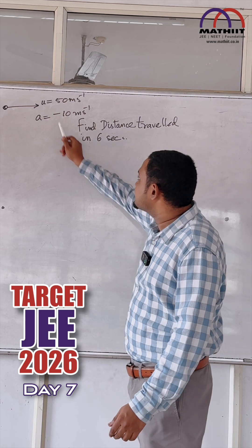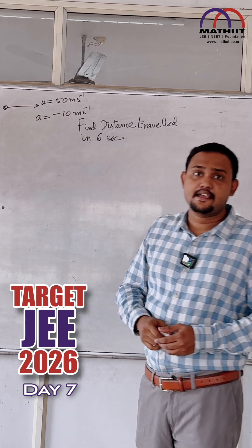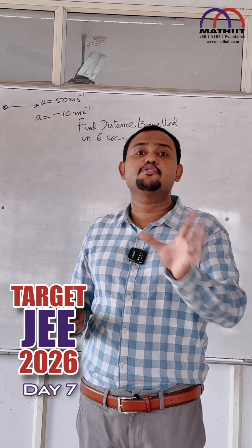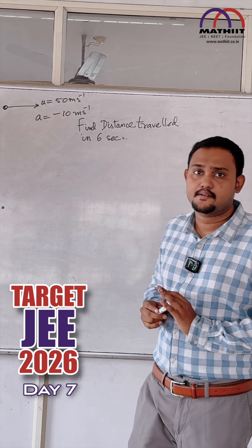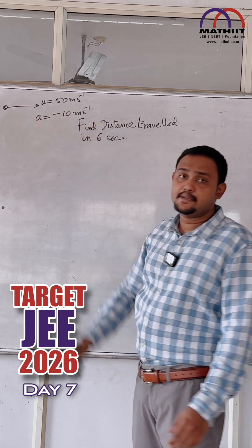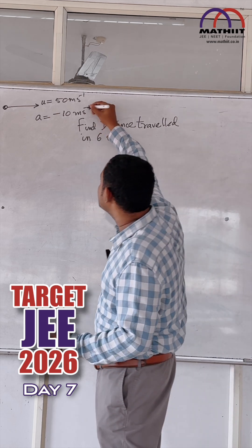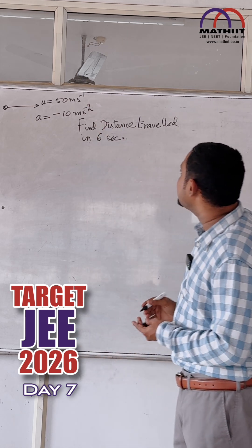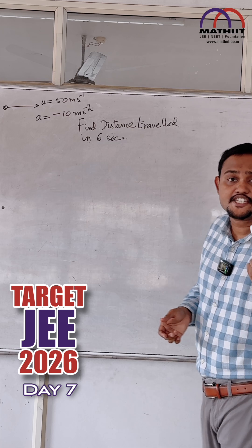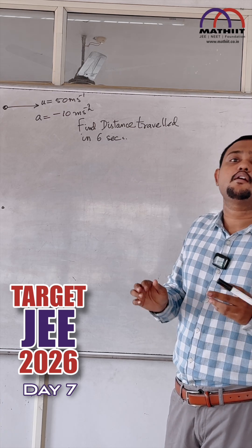The question is this: there is a particle moving along a straight line with an initial velocity u equal to 50 meters per second and an acceleration of minus 10 meters per second squared. We have to find the distance traveled in the first 6 seconds. The trap is that you cannot directly apply s equal to ut plus half at squared in one go.